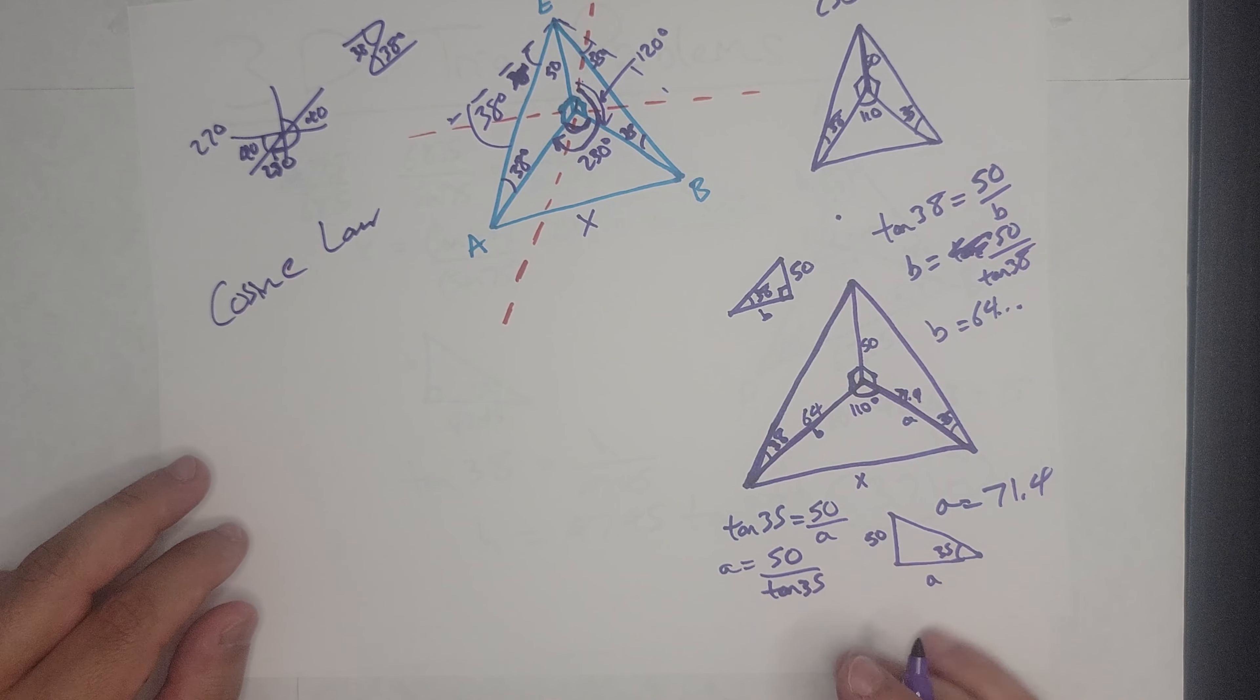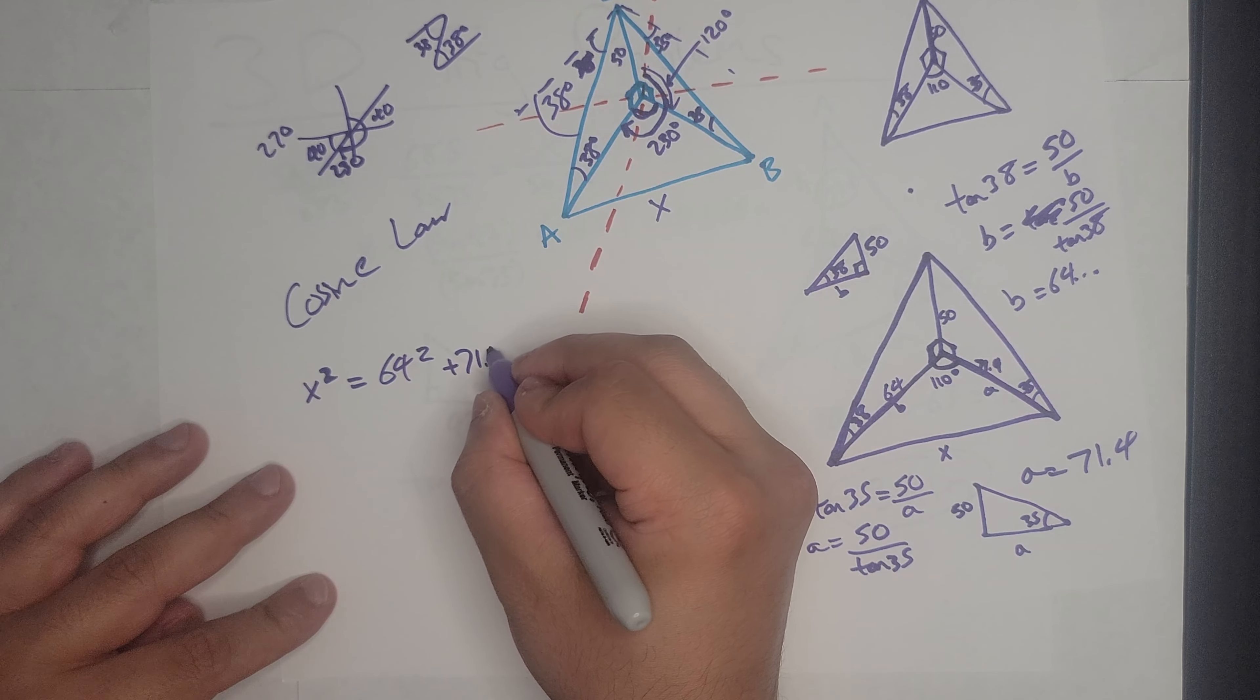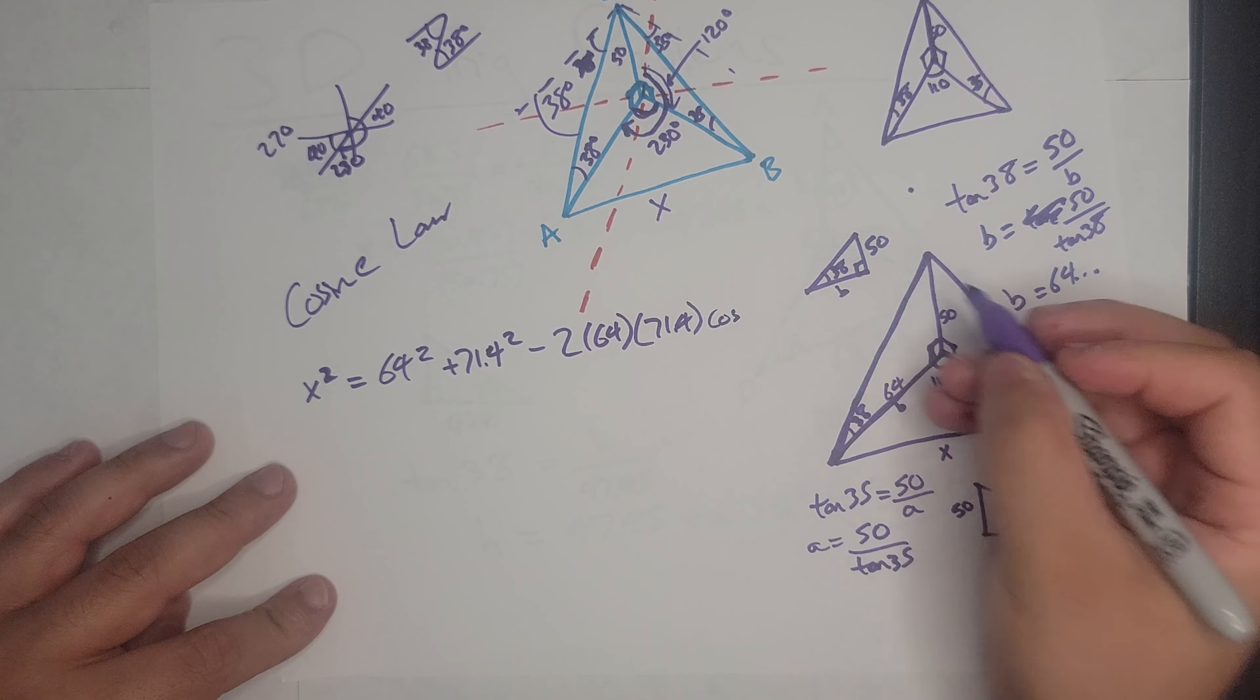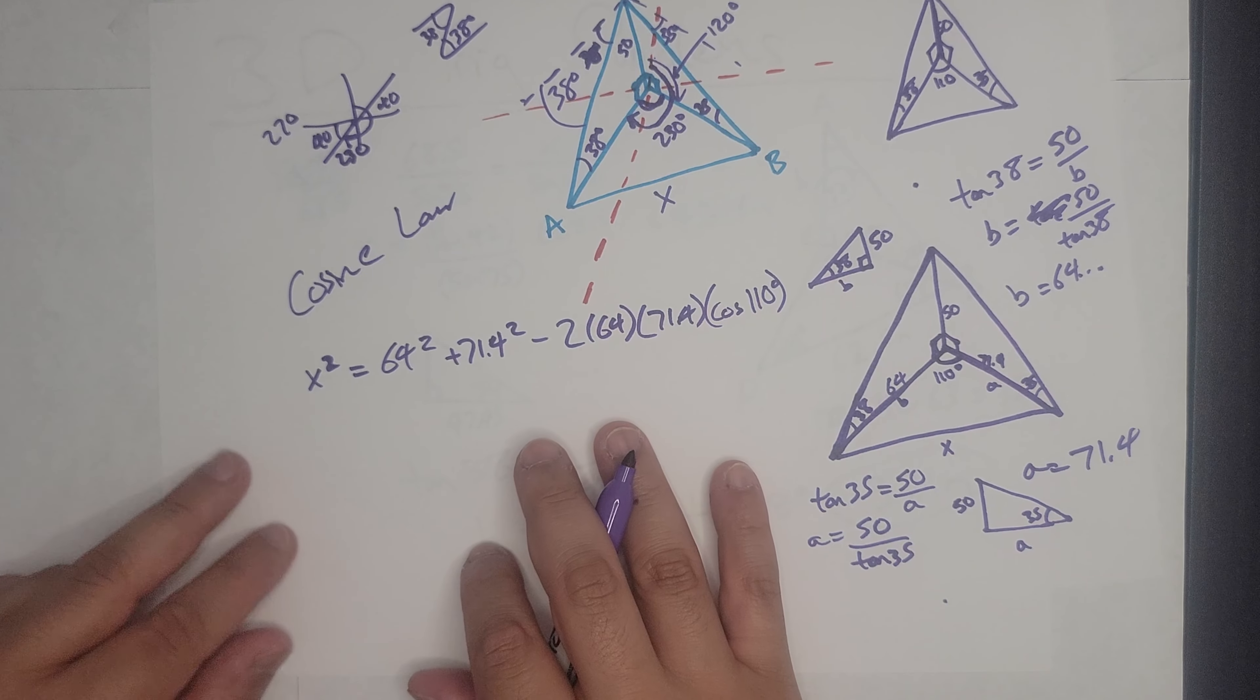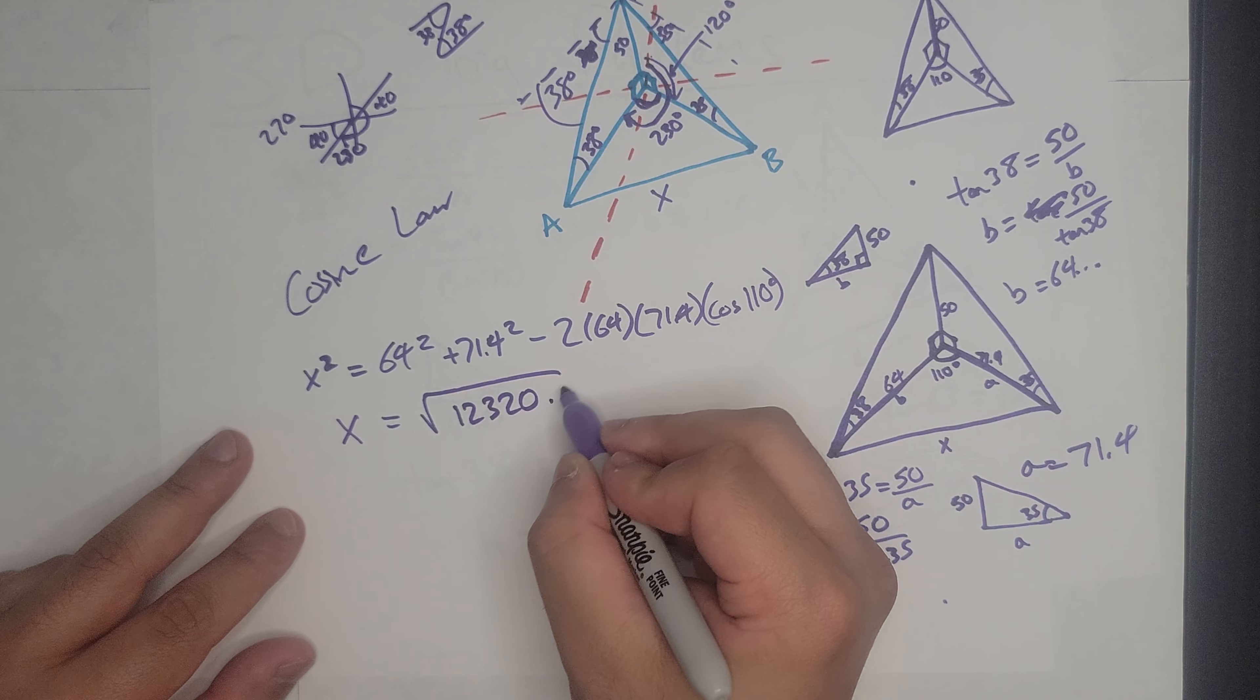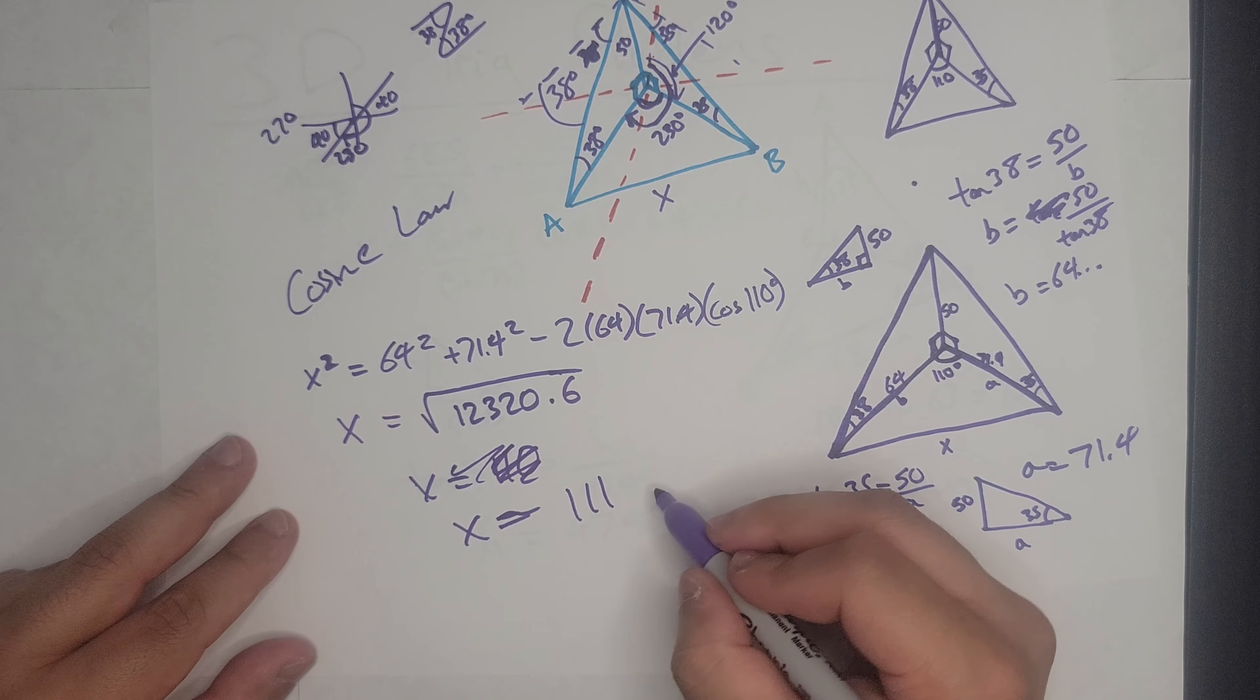So let's start punching these numbers in. So let's do, I have x here, let's do x squared is equal to 64 squared plus 71.4 squared minus 2 times 64 times 71.4 times cosine at the opposite angle. And from here on out, it's just smooth sailing. It's all just calculator work. X is equal to about 111 meters.